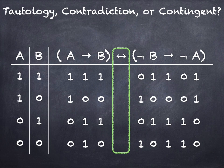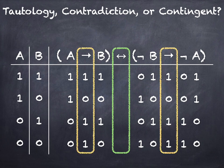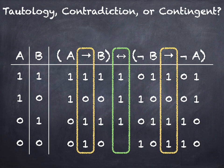We have to compare the two sub-expressions on the left and right, which are both conditionals. Let's step through this carefully. We've got a 1 and a 1 — that's a 1 on the biconditional. A 0 and a 0 on the next line — also a 1. A 1 and a 1 on the biconditional is also a 1, and then 1 and 1 is a 1. So it's a 1 in every line, and that tells us we've got a tautology. So that's the first problem.